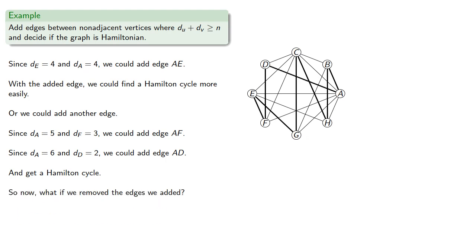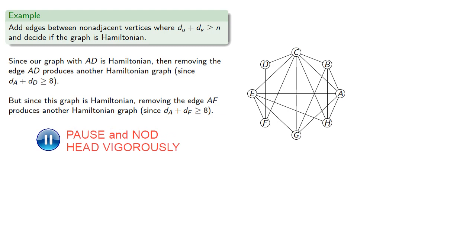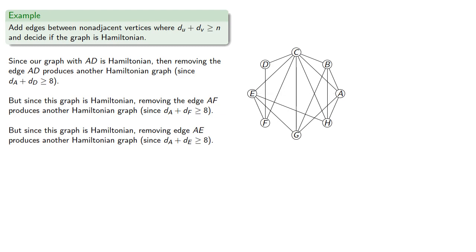So now what if we remove the edges we added? And remember, since our graph with the edge AD is Hamiltonian, then removing the edge AD produces another Hamiltonian graph, because the degree sum is at least as great as the number of vertices. But since this graph is Hamiltonian, removing the edge AF produces another Hamiltonian graph, and so we know the original graph was Hamiltonian.